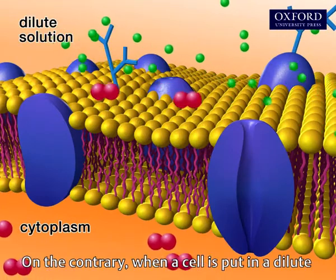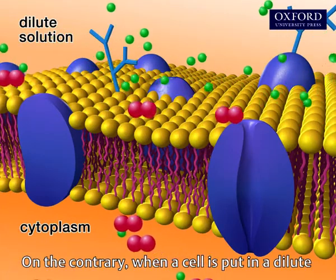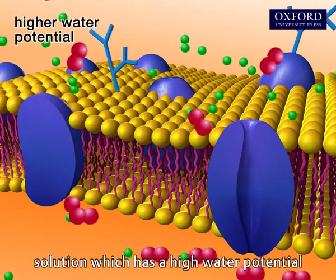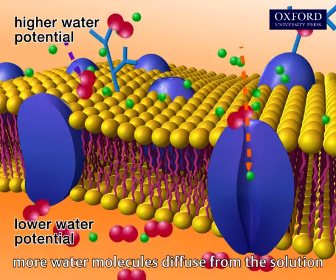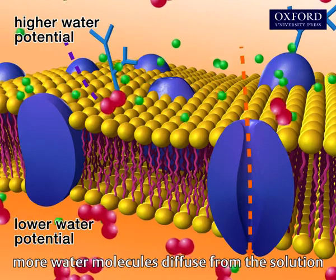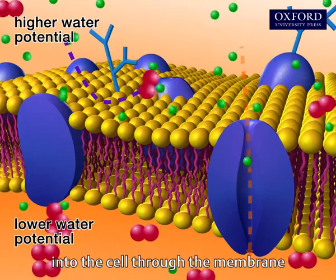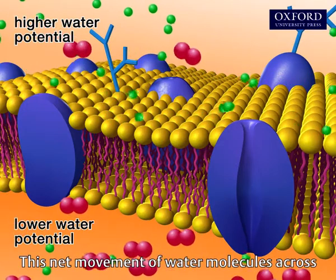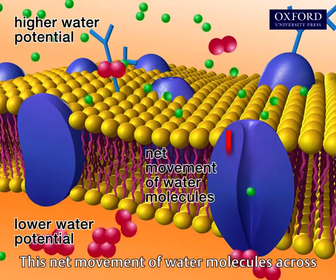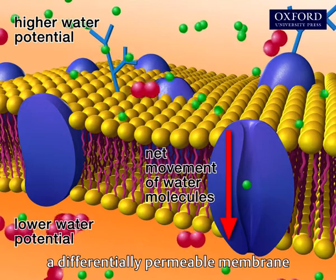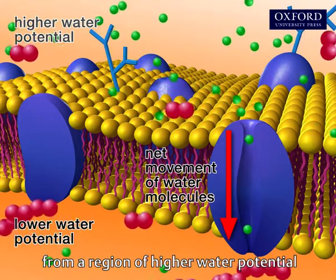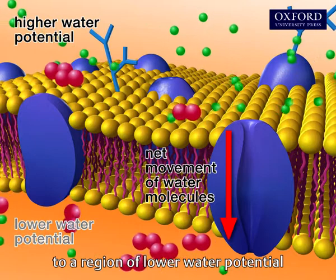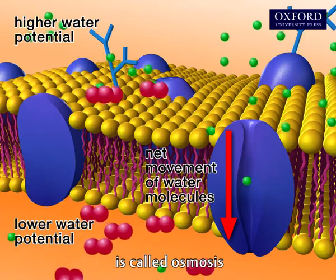On the contrary, when a cell is put in a dilute solution which has a high water potential, more water molecules diffuse from the solution into the cell through the membrane. This net movement of water molecules across a differentially permeable membrane from a region of higher water potential to a region of lower water potential is called osmosis.